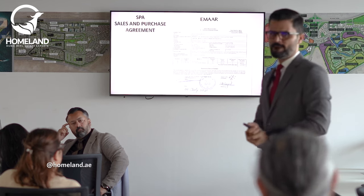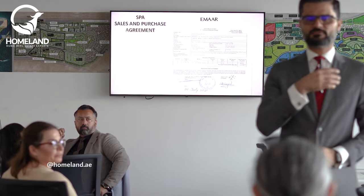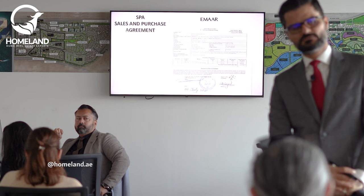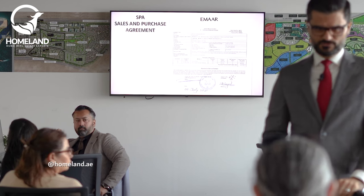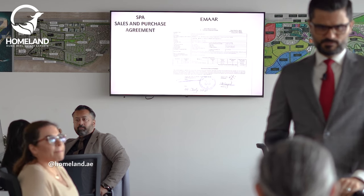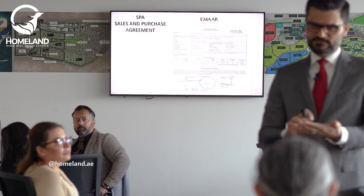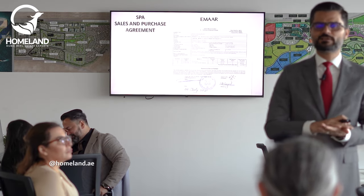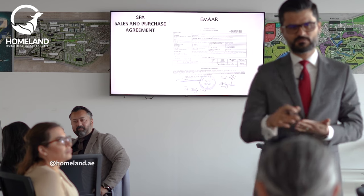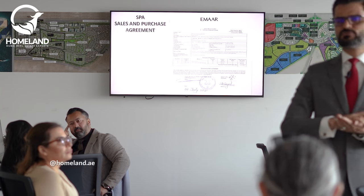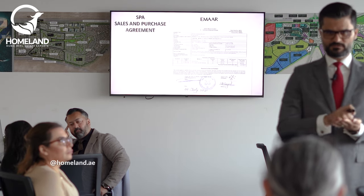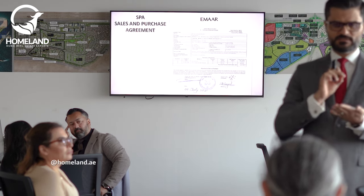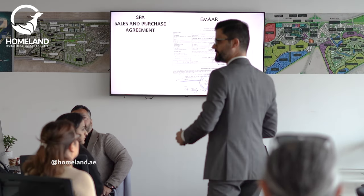For international clients, everything will be signed electronically except the SPA — the SPA has to be signed originally, so you have to get it couriered to the client. If you have a client out of the country, you go to EMAAR on behalf of the client, choose the unit, confirm the price and payment plan. You receive the client's passport copy, then log into the My EMAAR app — note that EMAAR One is for owners, while agents use My EMAAR app — with your username and password as a registered agent. When you log in, you will be able to book the unit.